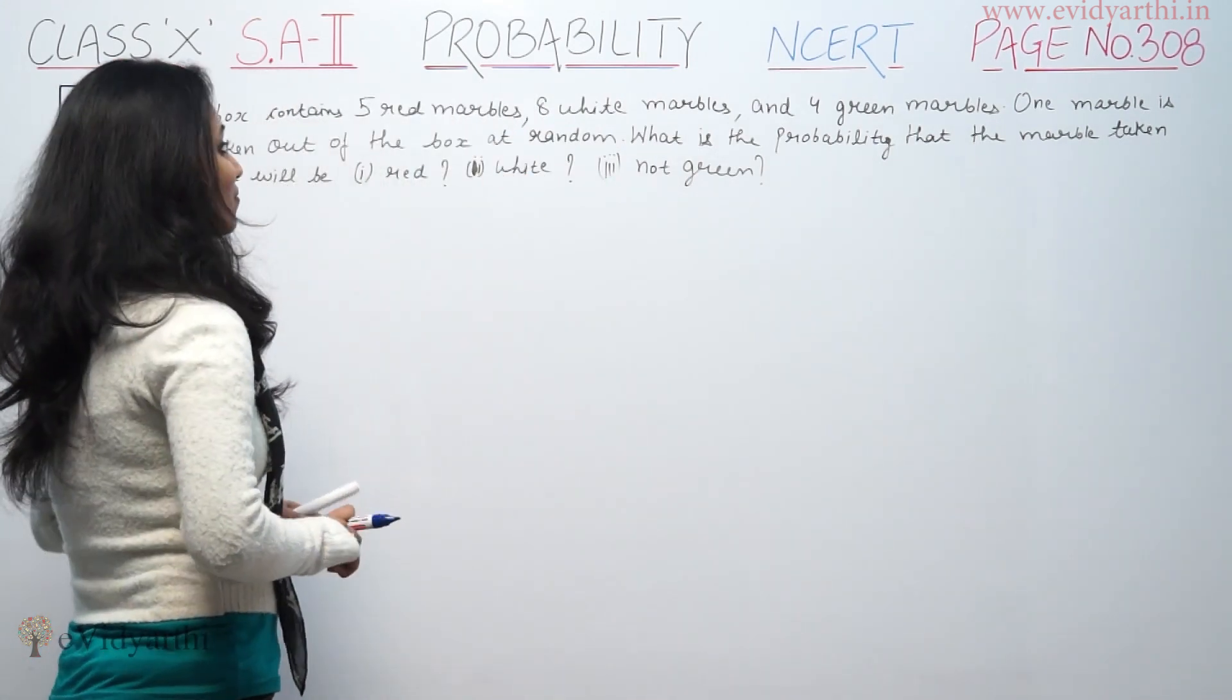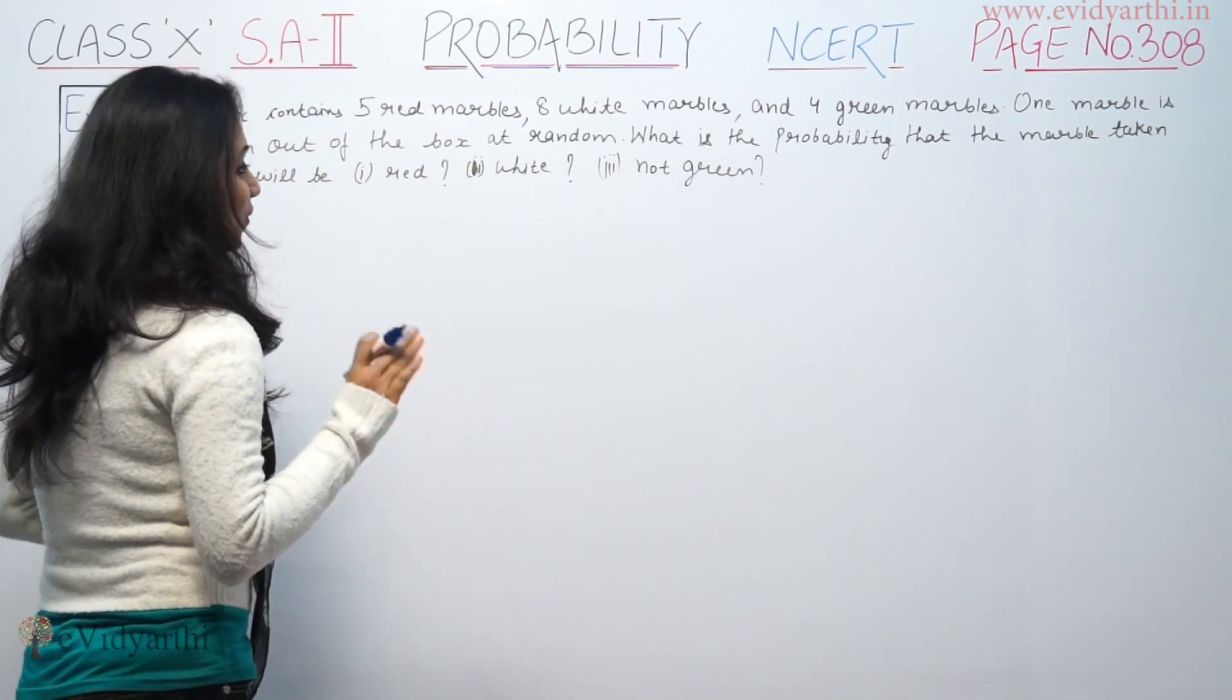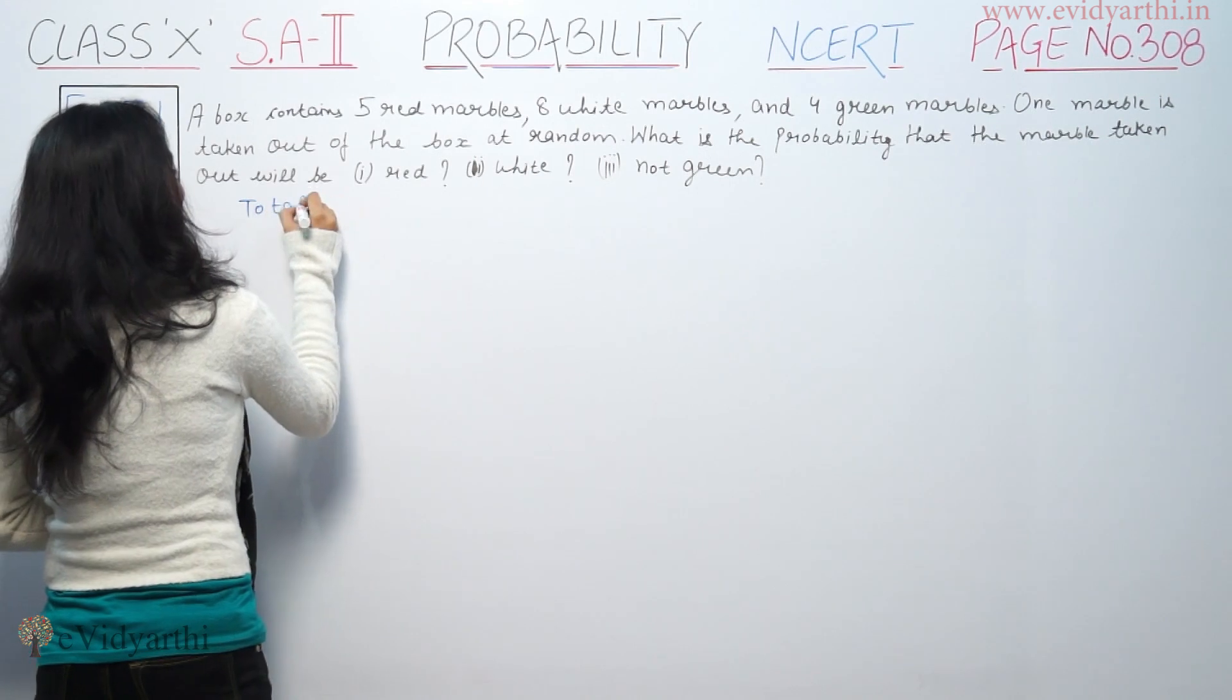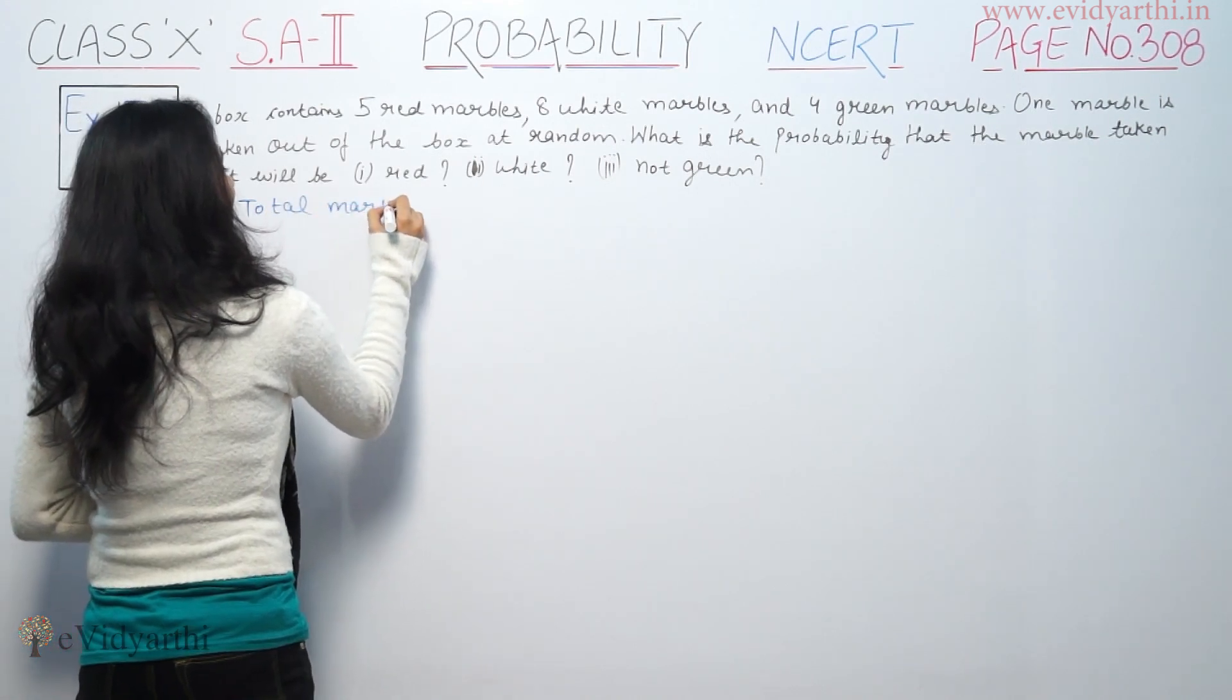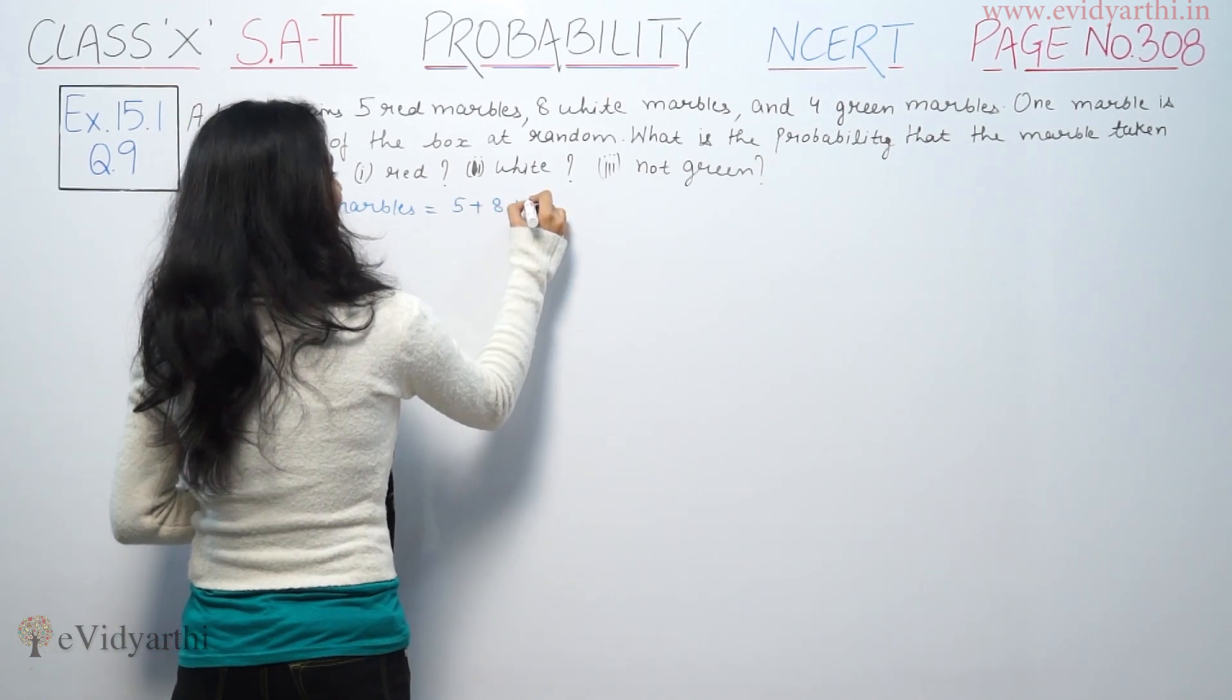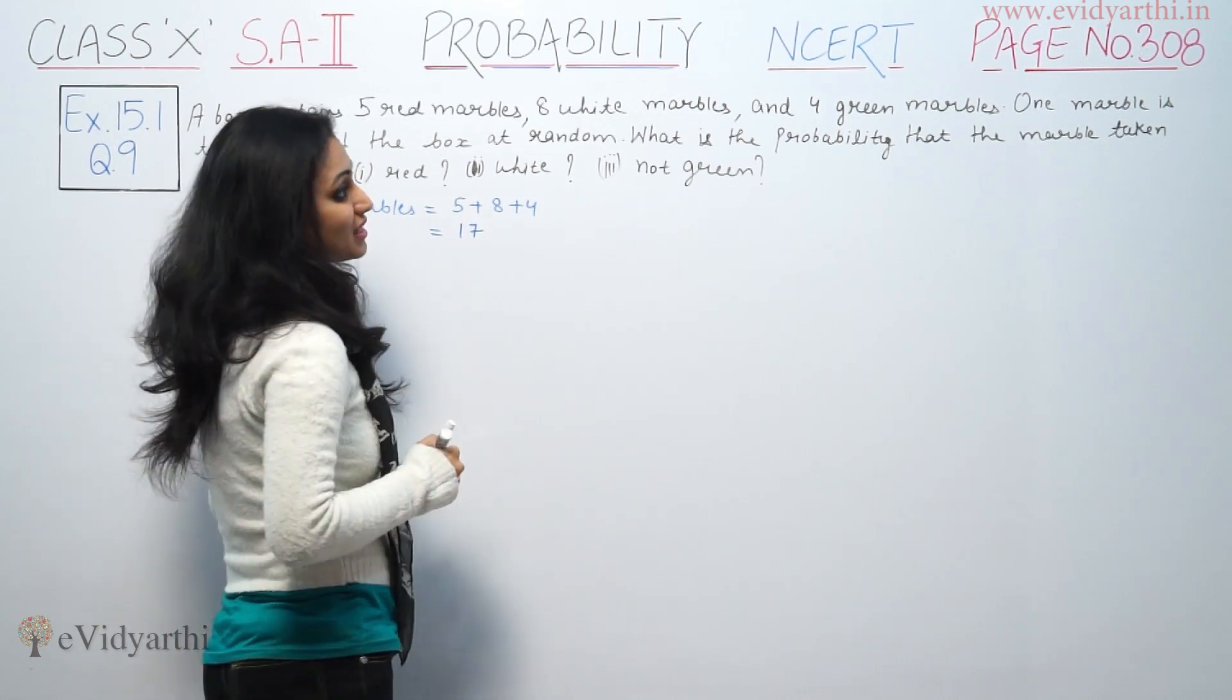A box contains 5 red marbles, 8 white marbles and 4 green marbles. Let us see total marbles: 5 plus 8 plus 4, 5 plus 8 is 13 plus 4 is 17. Total 17 marbles.